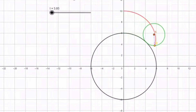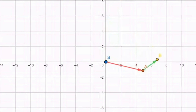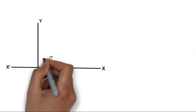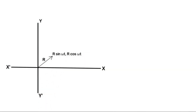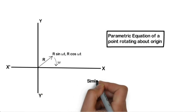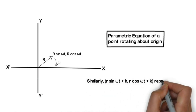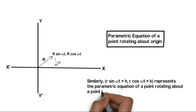Now let us come to circle-on-circle pure rolling and derive the equation of the cycloid. A point is rotating about a point which itself is rotating about another point. The equation R sin omega t, R cos omega t represents a point rotating about the origin at radius R with angular velocity omega. And the equation r sin omega t plus h, R cos omega t plus k represents a point rotating about another point h, k.